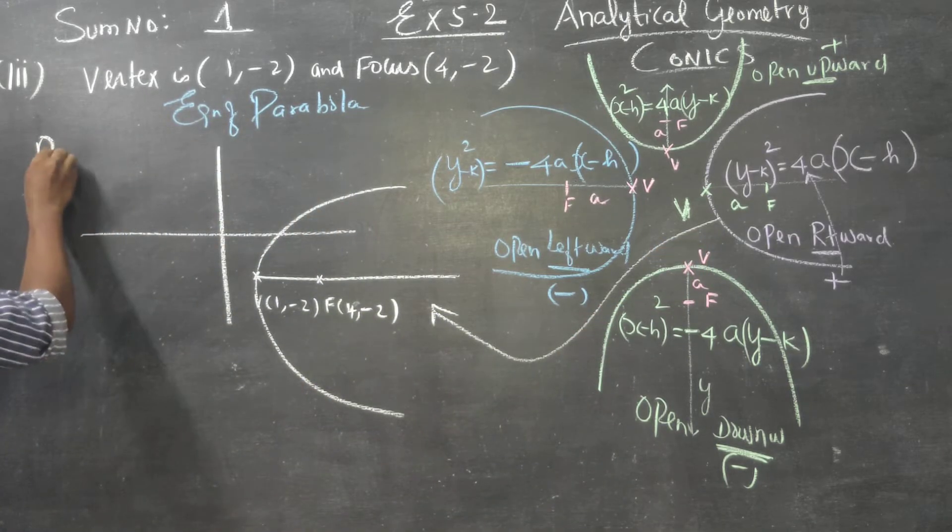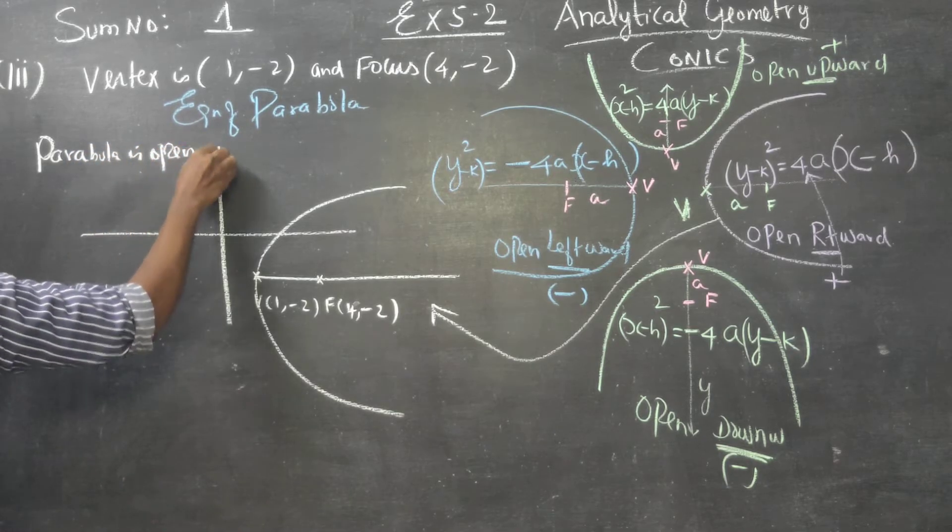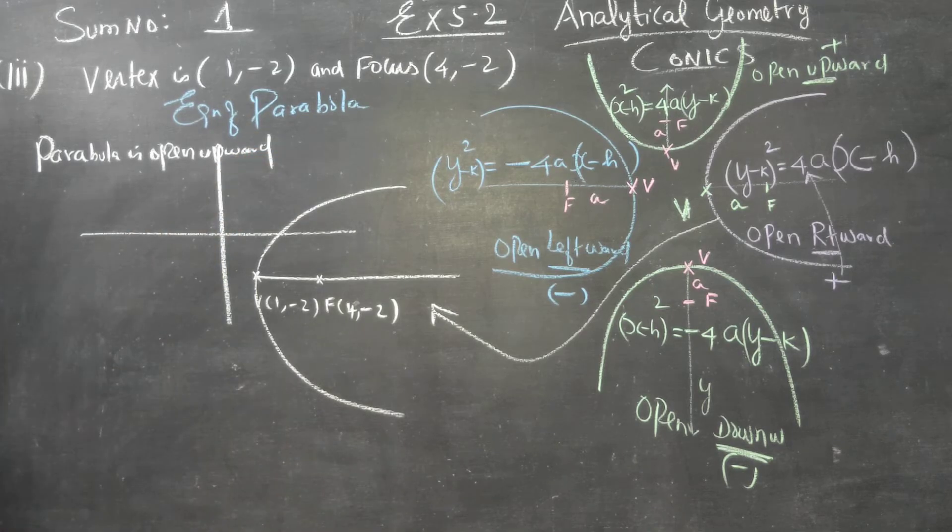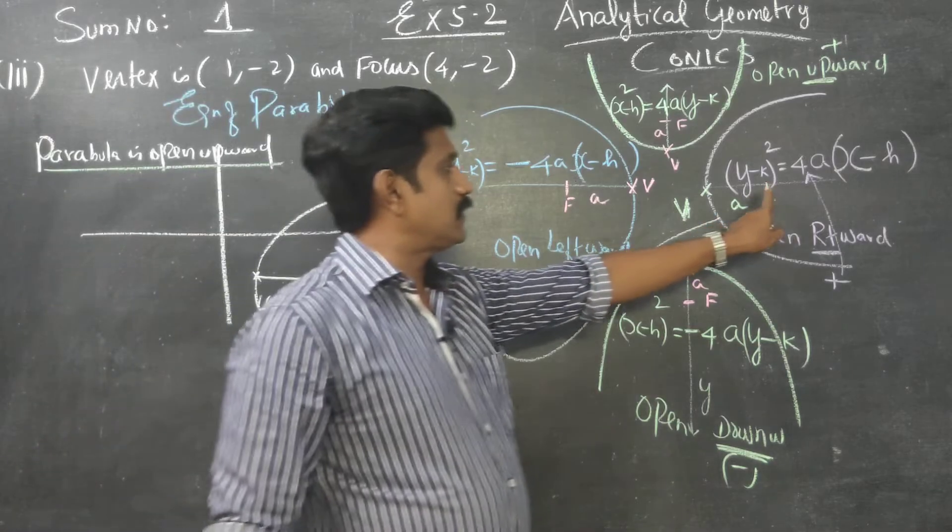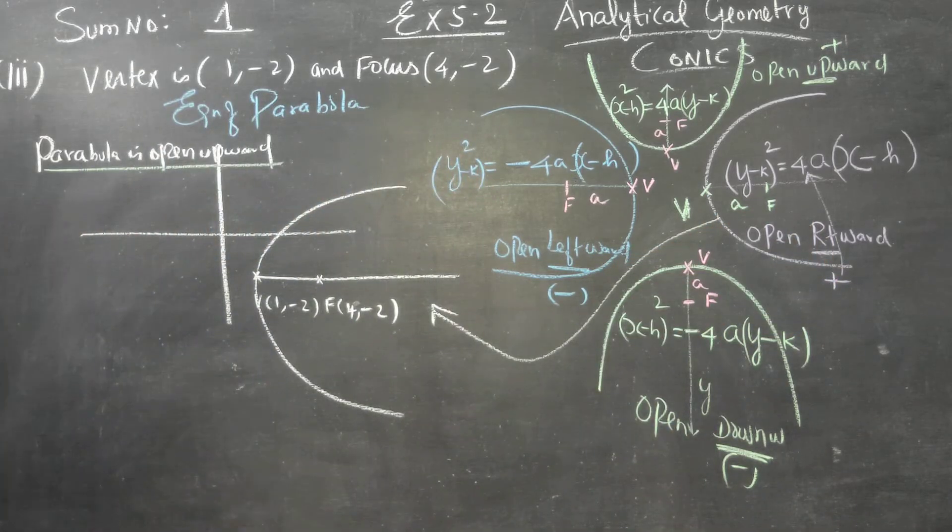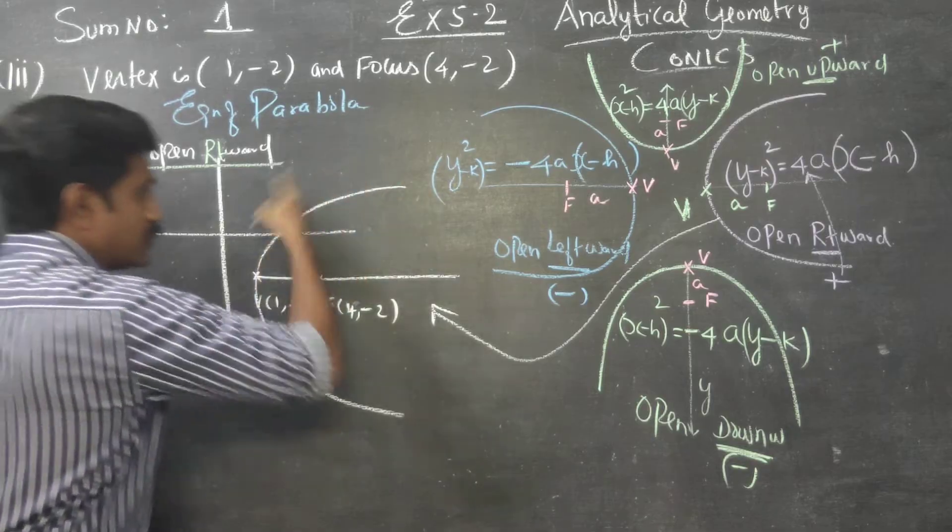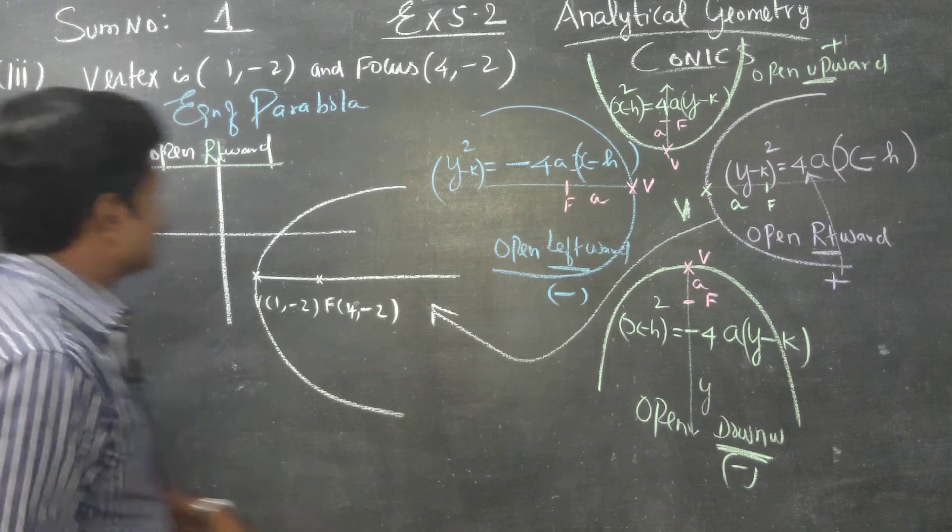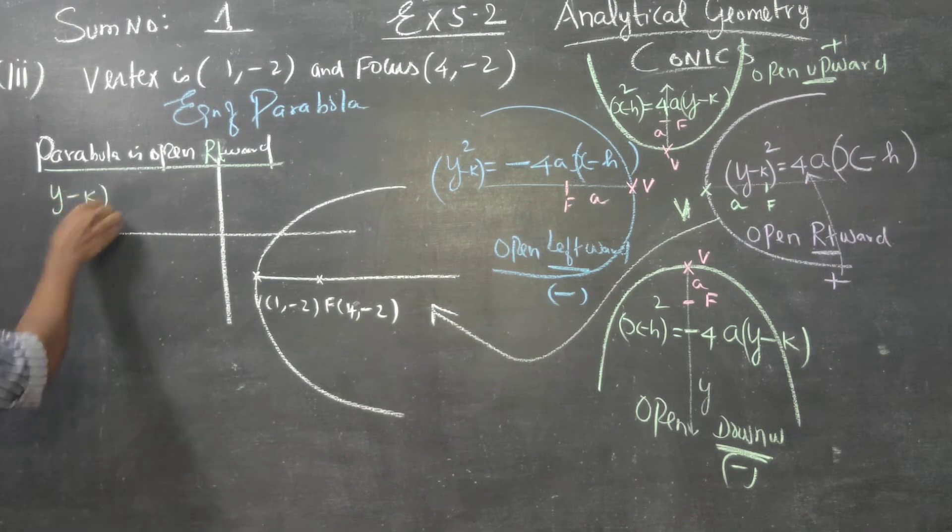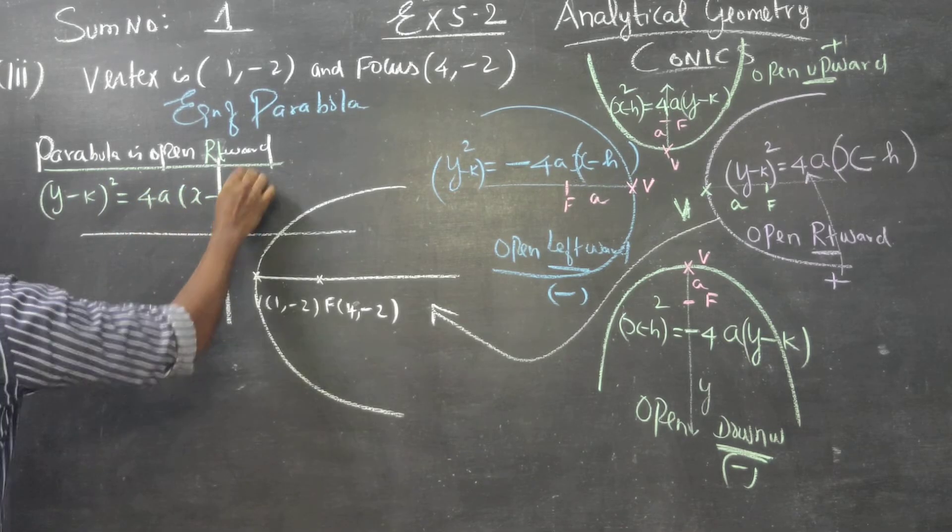I am starting my problem. My parabola is open rightward. Therefore, I am going to write this formula for rightward parabola: (y-k)² = 4a(x-h).